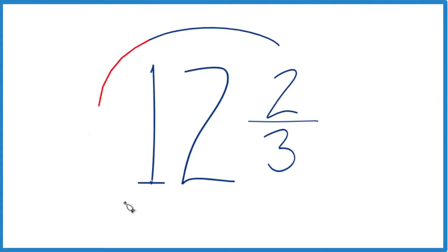If you're asked to write the mixed number 12 and 2 thirds as an improper fraction, here's how you do it.